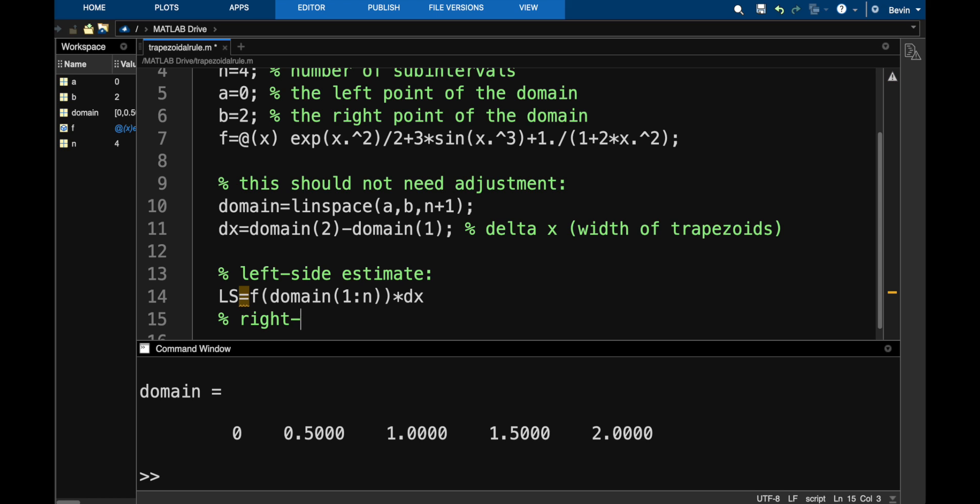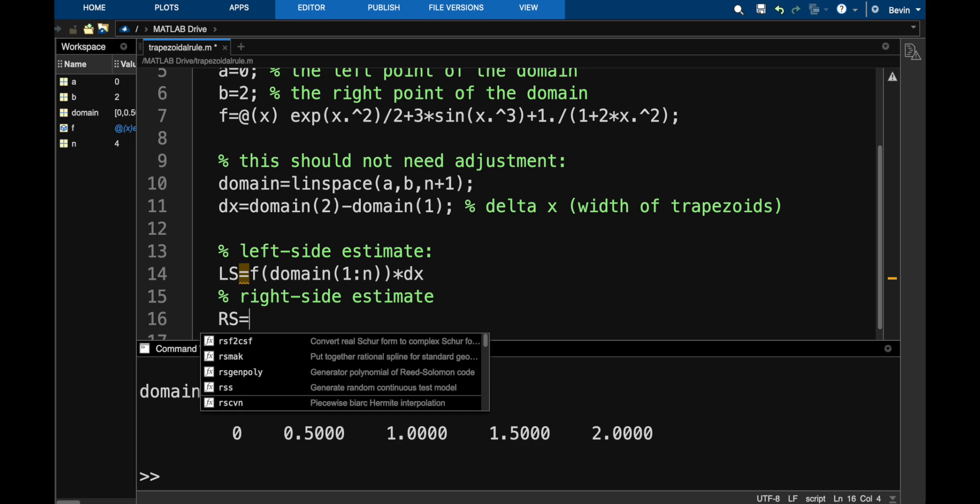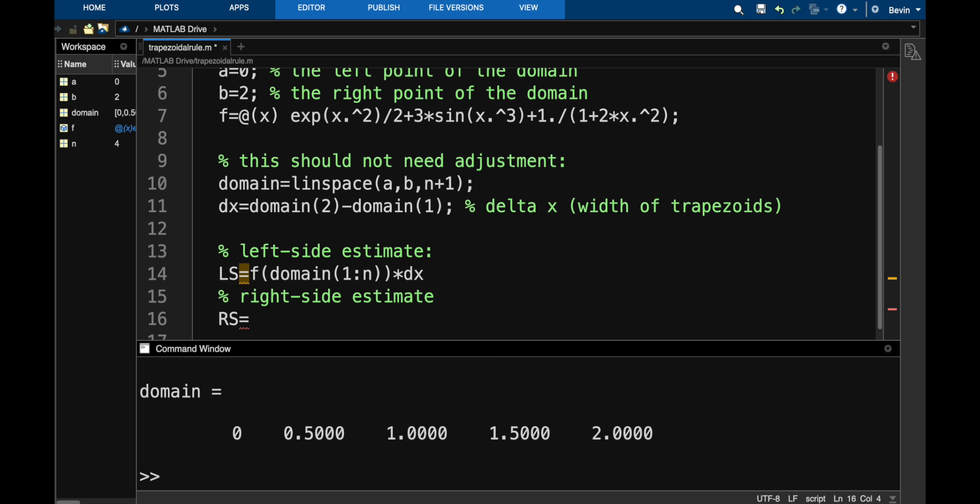Let's also do our right side estimate. I'll call this rs. And now for the function values, I need to shift what I did on line 14 over by 1. So we'll say it's f of the domain entries from the second entry through the final entry, which is actually the n plus 1th entry in our vector. For the domain vector we're looking at in the command window, that would be 0.5, 1, 1.5 and 2. And then we multiply that by the width of each trapezoid.